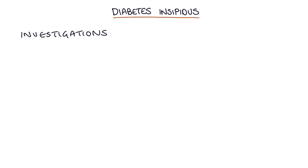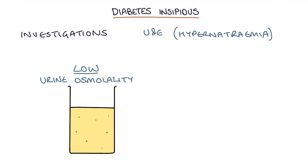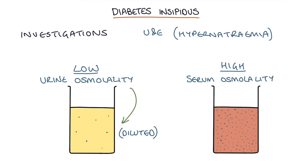How do you investigate them? You can do a urine and electrolytes blood test to check kidney function and you might find hypernatremia. You can also check the urine osmolality and you'll find a low urine osmolality, because there's a low concentration of solutes in the urine — they've all been diluted by water. And you'll find a high serum osmolality, as there's a high concentration of solutes in the blood.